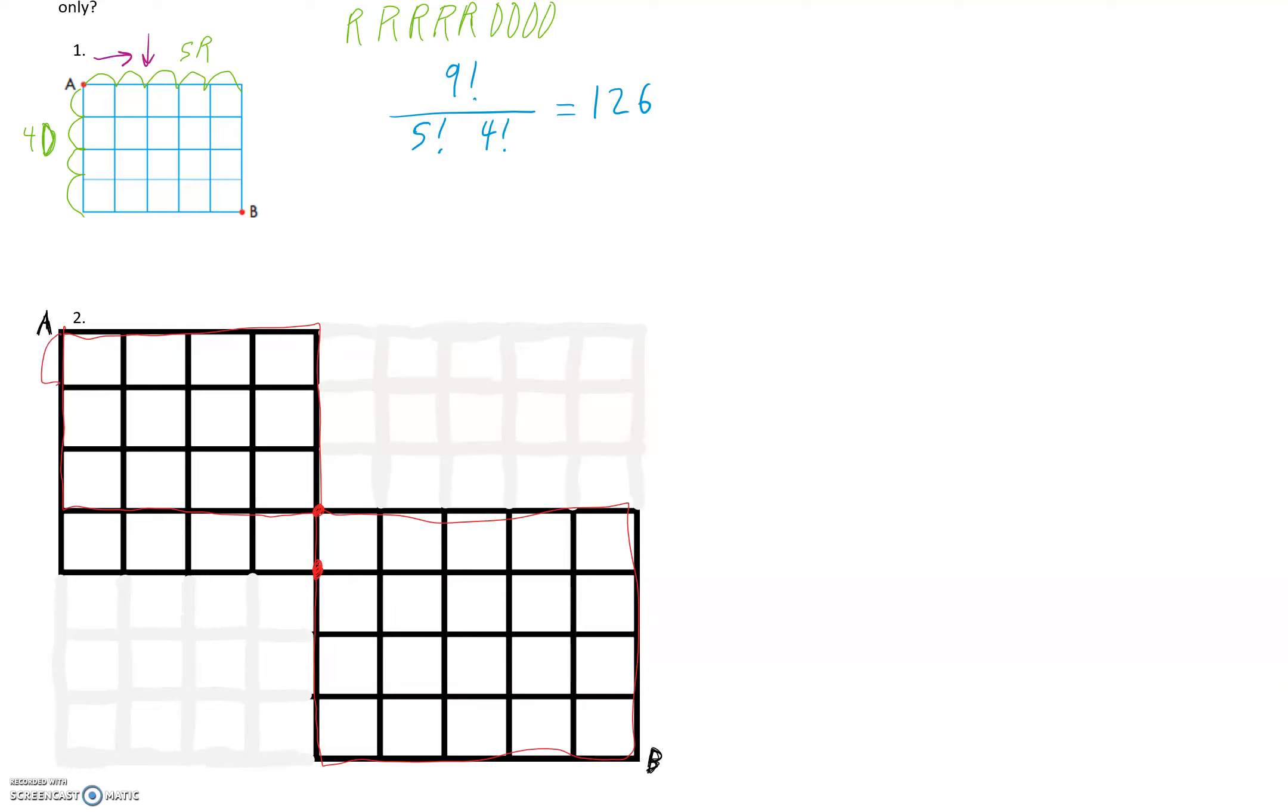So the first path is anywhere in this red square or anywhere in the bottom red square. So to start that off, we have three down and 1, 2, 3, 4 to the right. Okay, so three down, four to the right. So that situation would have 7 factorial over 4 factorial times 3 factorial. So that's that first part. The second one at the bottom here is this whole thing. So 1, 2, 3, 4 down, and 1, 2, 3, 4, 5 to the right. So this is 9 factorial over 5 factorial times 4 factorial, which we already got in the question above. So I'll just write it in.